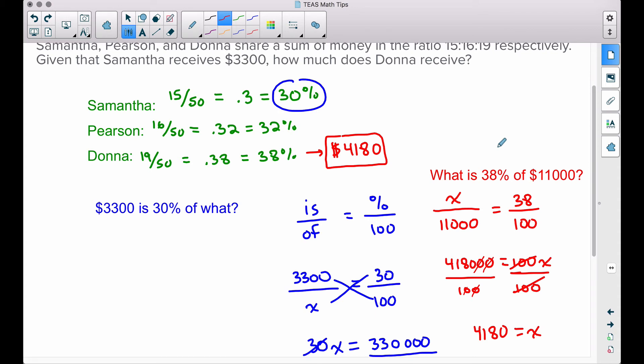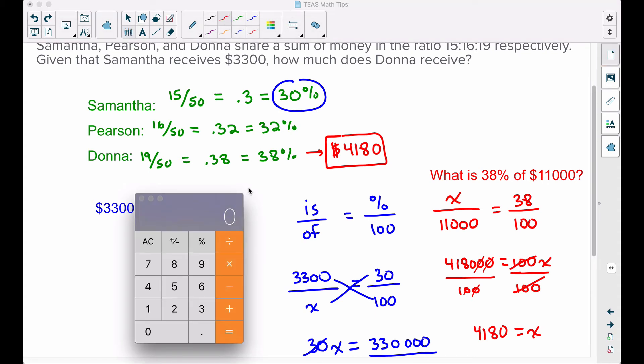But let me show you some shortcuts real quick. Once we did find the total amount of money that was going to be dispersed to all three individuals, which was the $11,000, check this out.